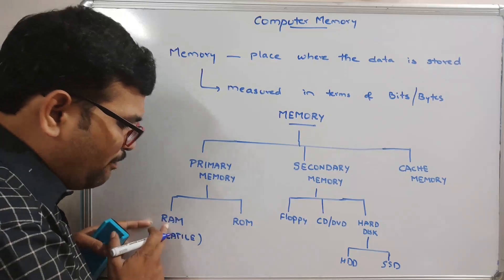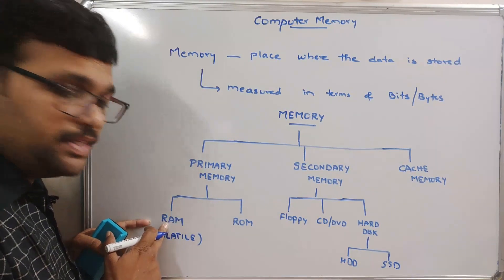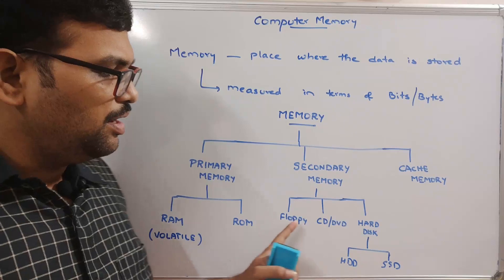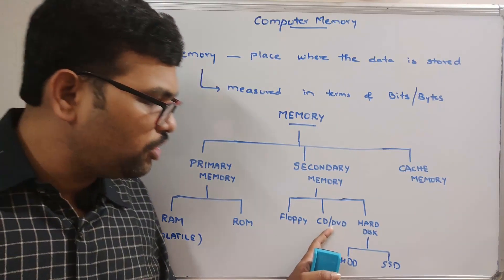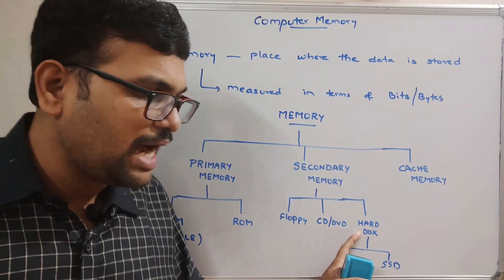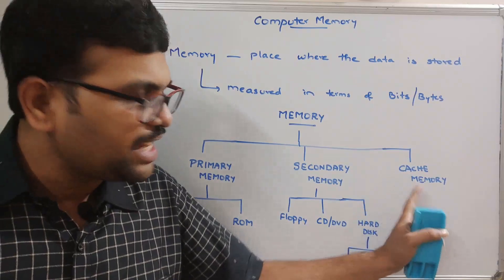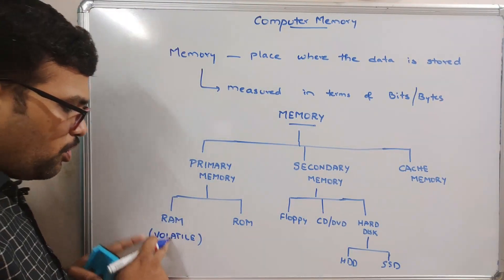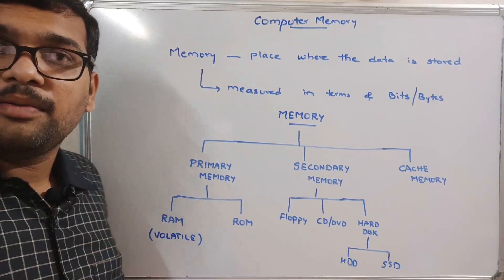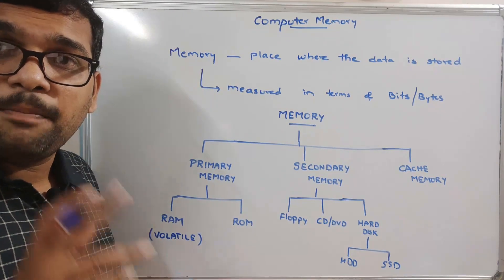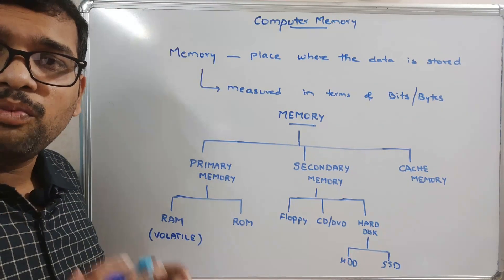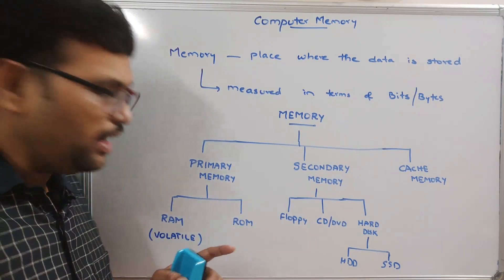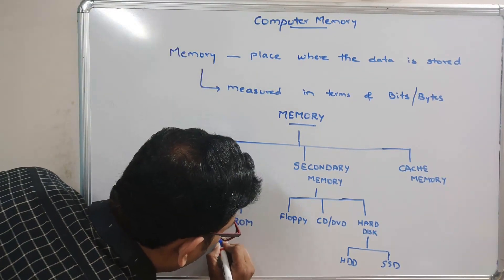All types of memory store data — RAM stores data, ROM stores data, floppy can store data, CD or DVD can store data, hard disk can store data, and cache memory can also store data. RAM is called volatile memory because whenever the power is off, immediately whatever content is available in RAM will be erased. ROM means non-volatile.